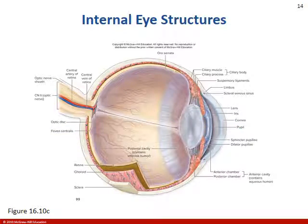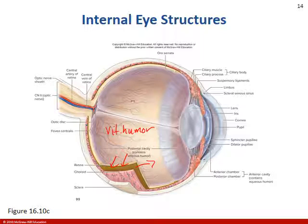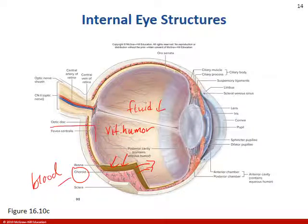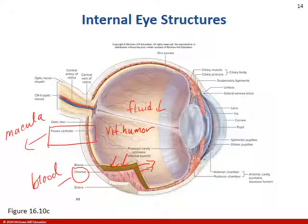The only thing keeping the retina against the back of the eye is the vitreous humor. Sometimes the retina can peel away or become detached if the fluid level goes down — the retina can peel away from the choroid, which is the blood supply. Retinal detachment is bad; you'll usually see floaters and it will affect your vision. You can also have macular degeneration in the fovea centralis area, making it very hard to do fine, precision, detailed viewing.